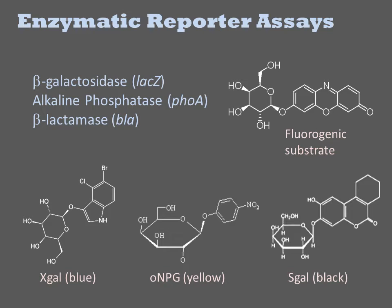If you just replace the galactose moiety with phosphate, all the same color-generating chemicals can be used to monitor alkaline phosphatase activity. Though the same diversity of substrate does not exist for beta-lactamase, a limited set of fluorogenic and chromogenic substrates, including nitrocephin, exist here too.